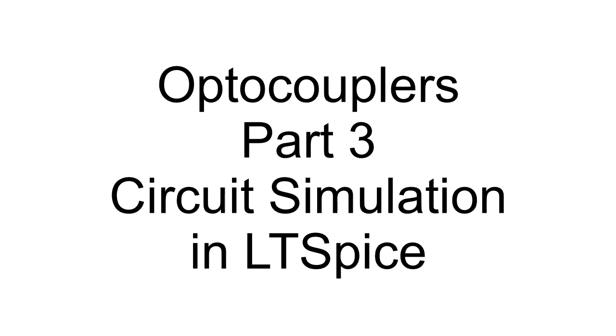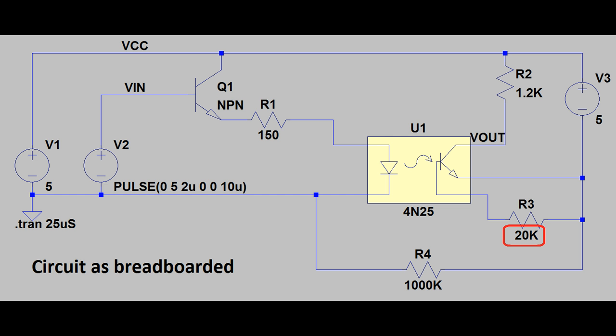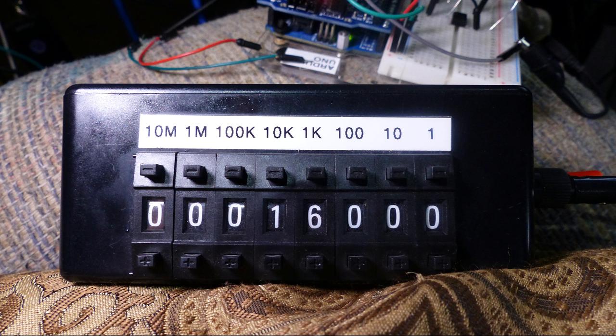Landboards presents Optocouplers Part 3: Circuit Simulation in LTSpice. Here's the circuit as we built up on the breadboard in Parts 1 and 2 of this video. The resistor going into the base of the output phototransistor was 20k, and we picked that value with a decade resistor box, tuning the resistor value to the optimal value for the output waveform high and low transitions to be symmetric and as short as possible.